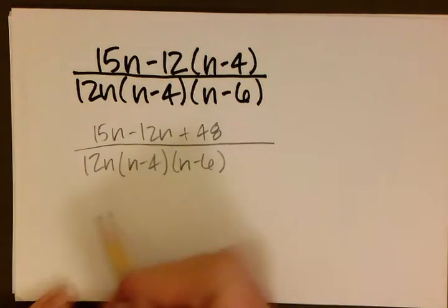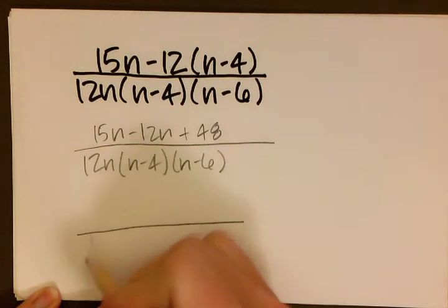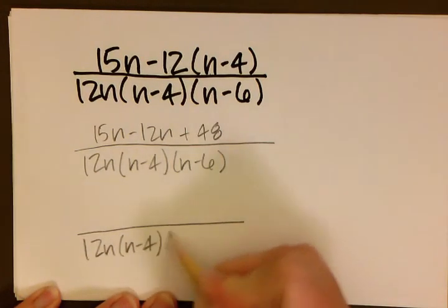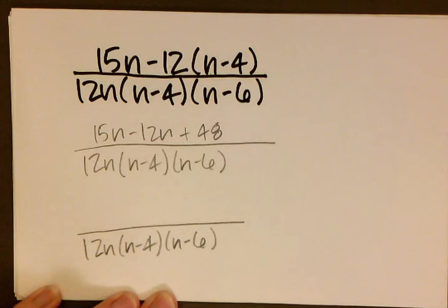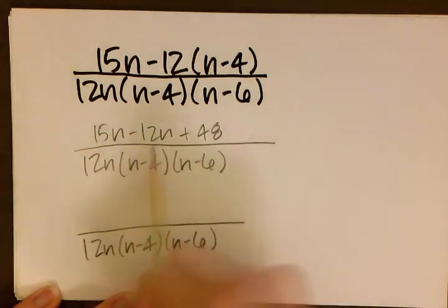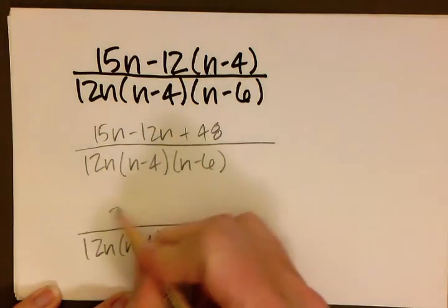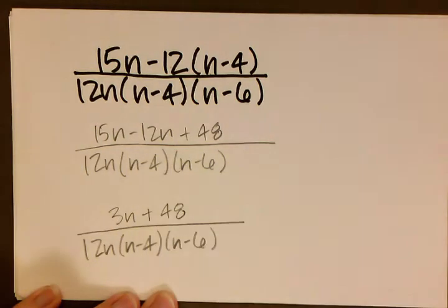Now it's time to combine like terms. Keeping that denominator as it is, 15n minus 12n is 3n, and 48.